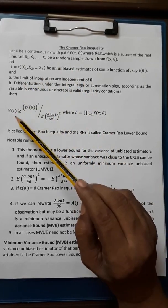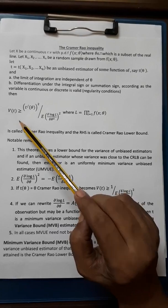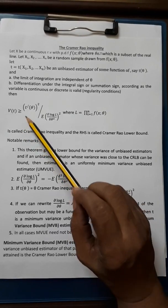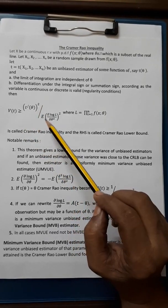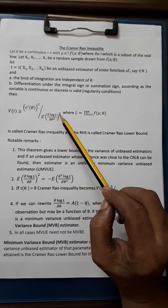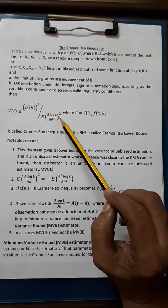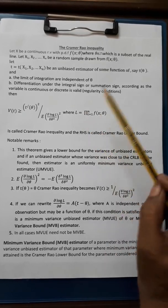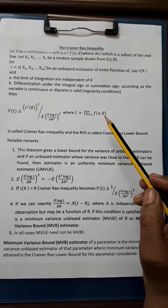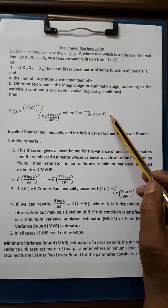After satisfying these regularity conditions, then variance of t is greater than or equal to [τ'(θ)]² divided by expectation of [∂log L/∂θ]² where L is ∏ᵢ₌₁ⁿ f(xᵢ,θ).